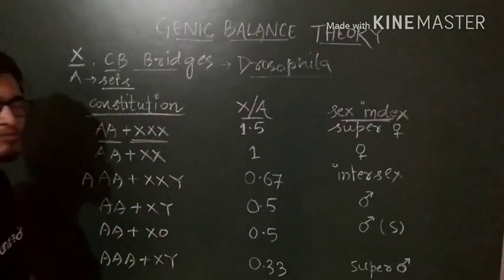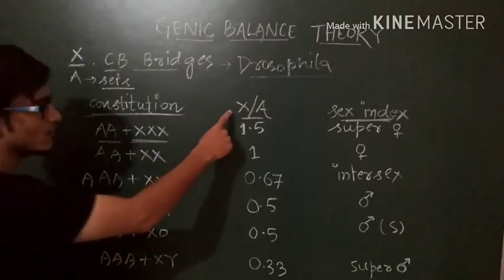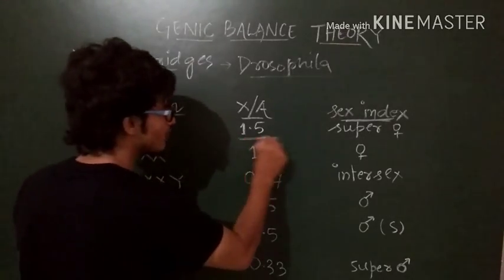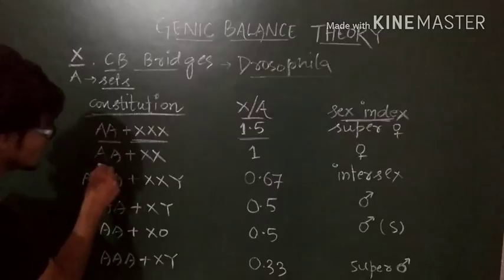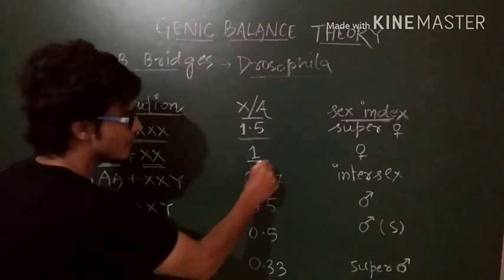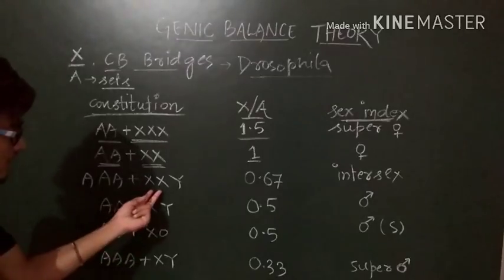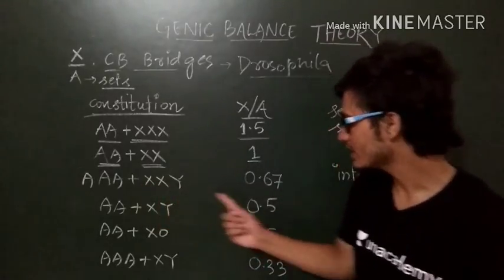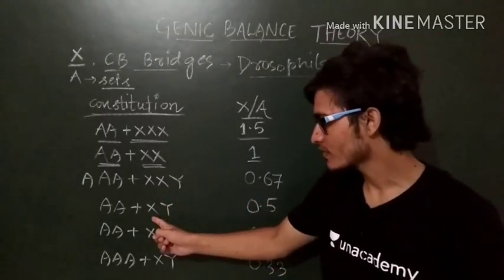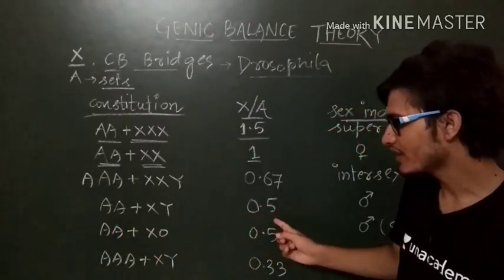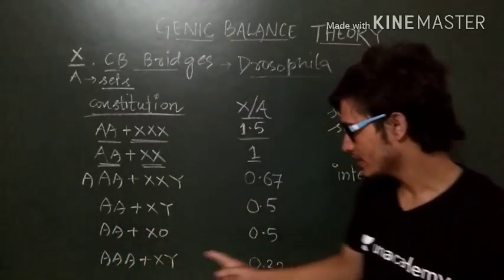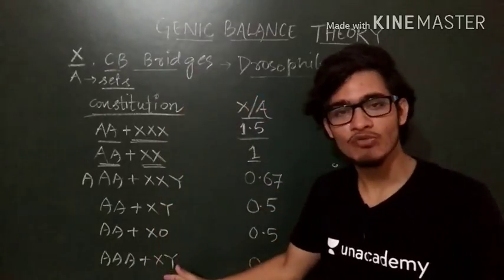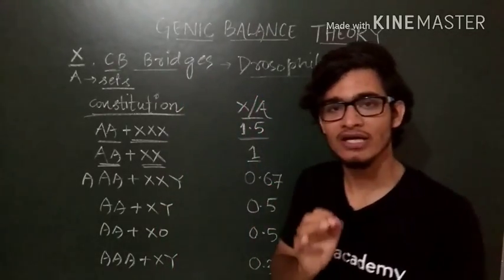The very first combination is double A plus triple X. That is, the number of X chromosomes is 3 and the sets of autosome is 2, so 3 by 2 is 1.5. Then double A, double X, that is 2 by 2 is 1. Then 2X, 3A, that is 2 by 3, and that 2 by 3 is 0.67. Then 1 by 2, that is 0.5. Then 1 by 2 again, that is 0.5 again. Then 1 by 3, that is 0.33.